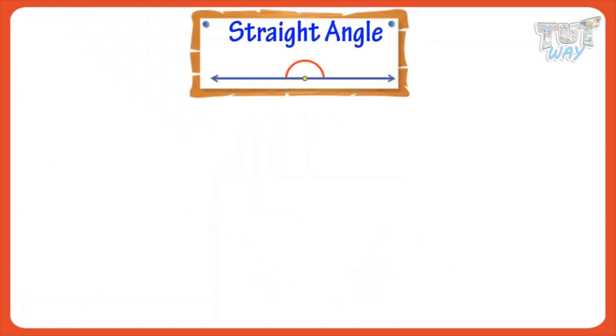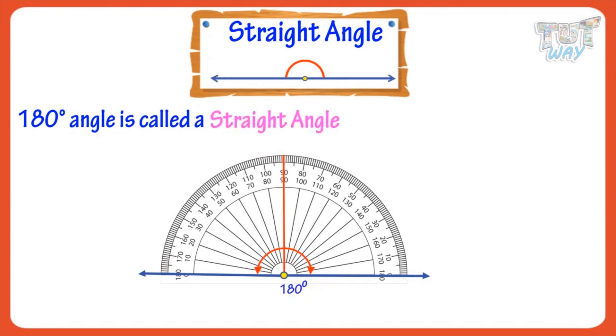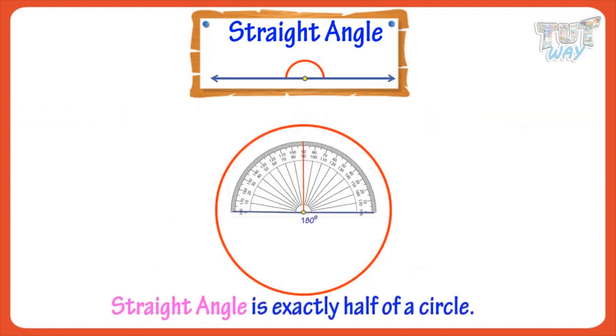Now, let's see what is a straight angle. A 180 degree angle is called a straight angle as it's a straight line. So, straight angle is exactly half of a circle.